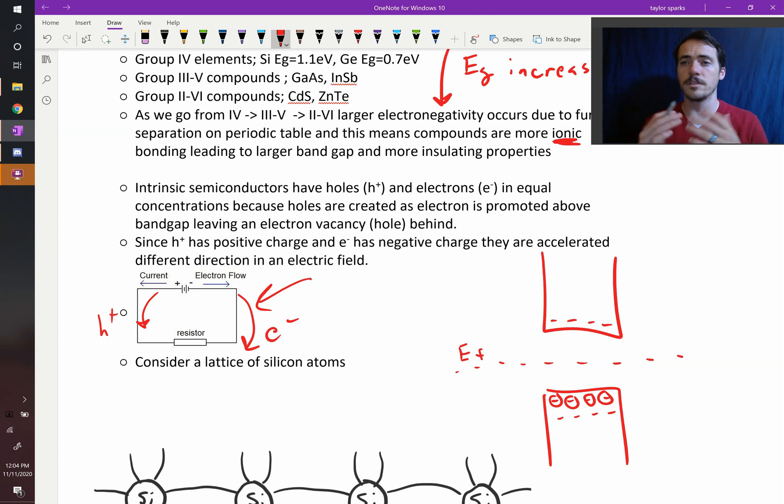So these will travel opposite directions, but they create current in the exact same way. It's the same current, the current is the same direction, but your electrons, which are negatively charged, go one way and your holes, which are positively charged, go the other way. But they both contribute to the electrical conductivity.